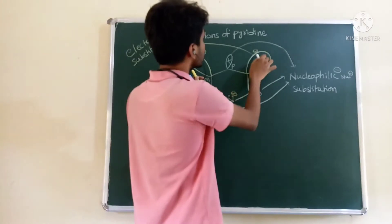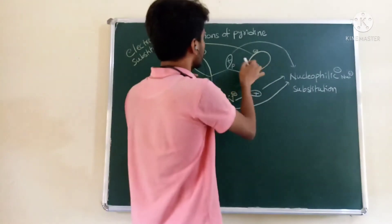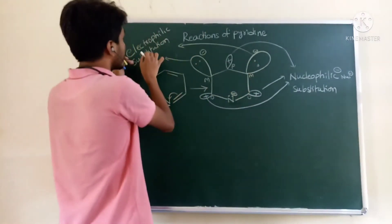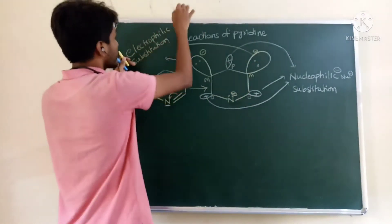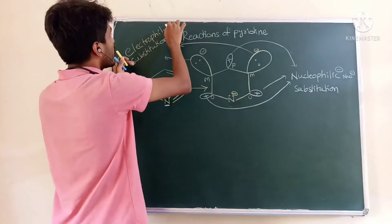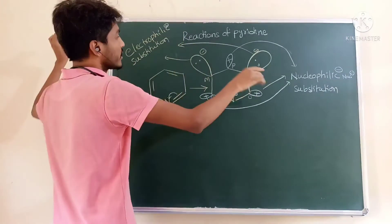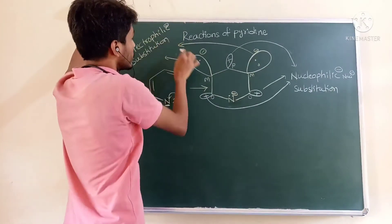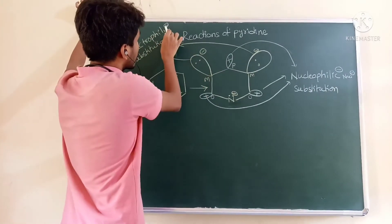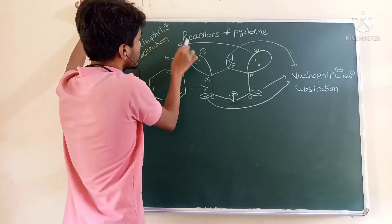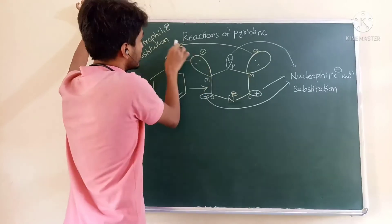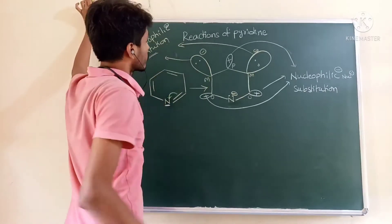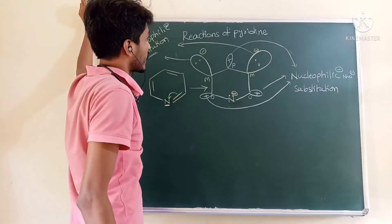The meta position retains electron density, hence it undergoes electrophilic attack. The electrophile has a positive charge and the nucleophile has a negative charge, so the meta position undergoes electrophilic substitution reaction.